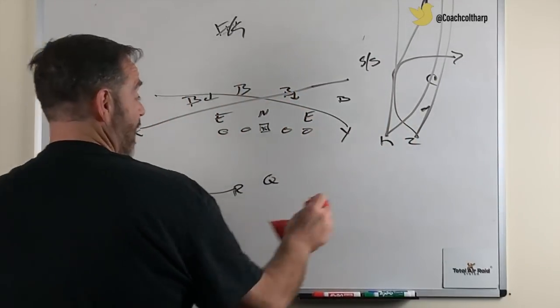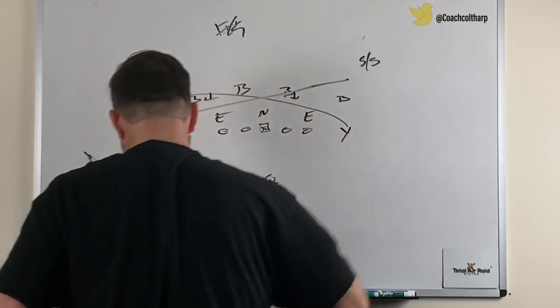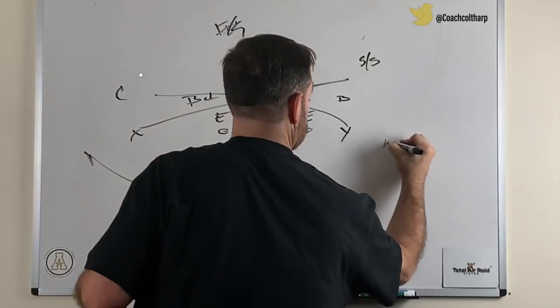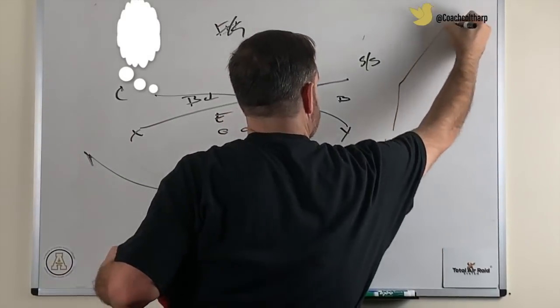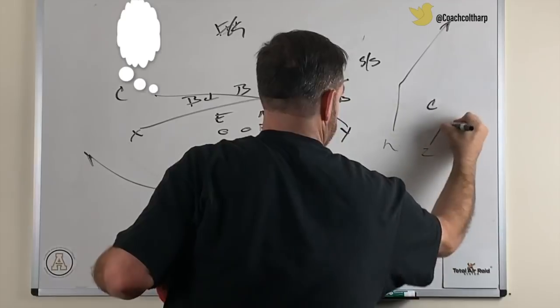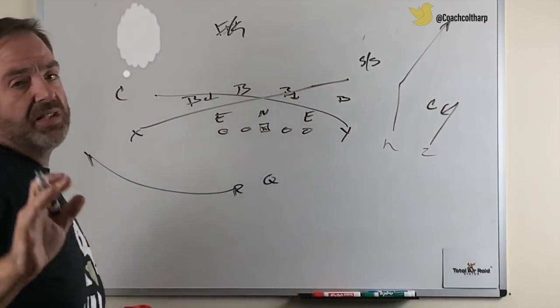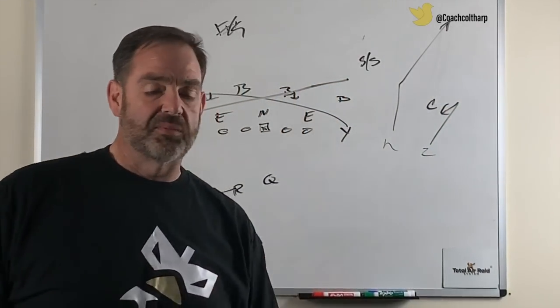He was going to read the high route, then this would take the place of the intermediate route. If you were running smash, you would read the corner route first, just like you would in regular progression. And I think that is something that you really have to understand when it comes to tags.